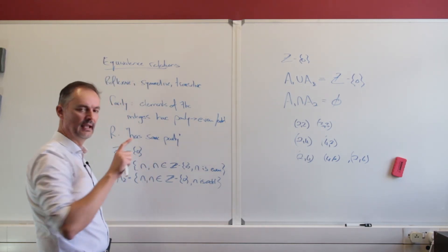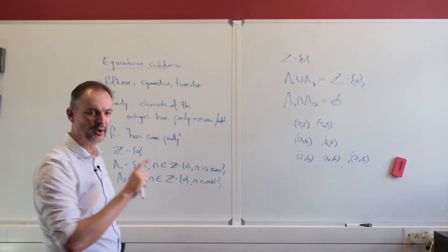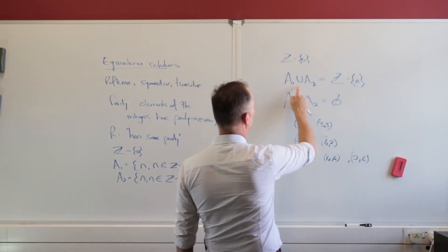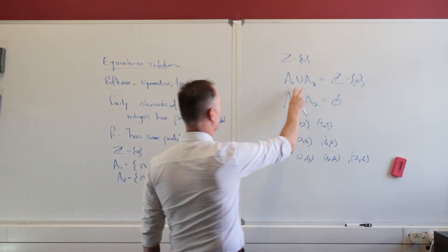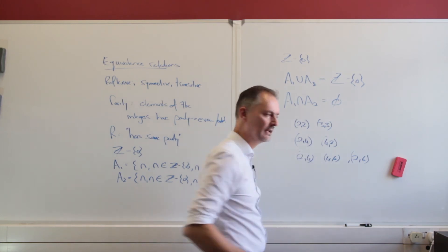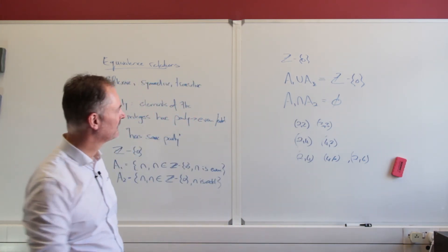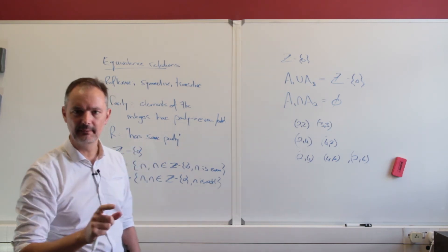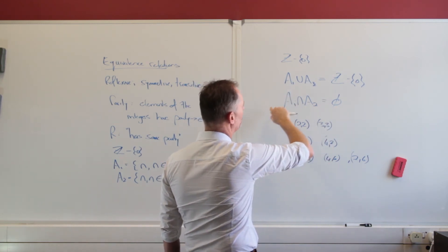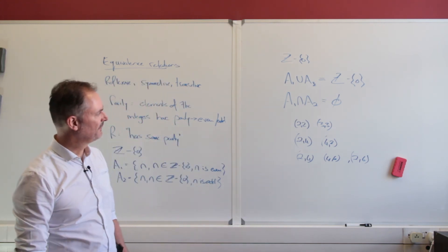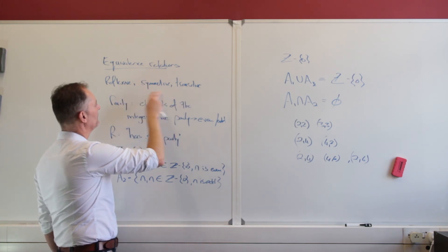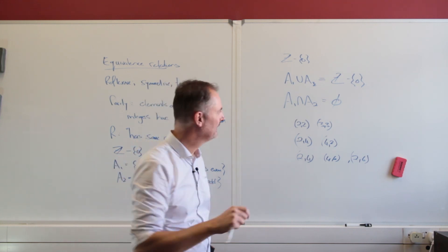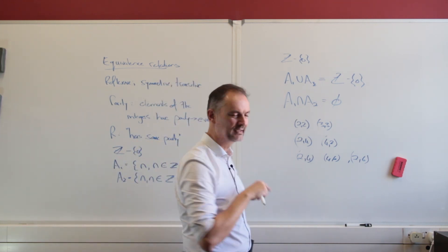The nice thing about an equivalence relation is it creates a partitioning of my original set. We know it's a partitioning if, when we take the union of all the subsets created through this equivalence relation, we get back to the original set — and if we take the intersection of any two partitions, that will be the empty set. So an equivalence relation is a relation that has all three of these properties — reflexive, symmetric, and transitive — with this unique property that it partitions my original set.